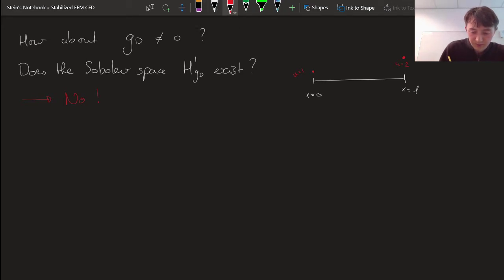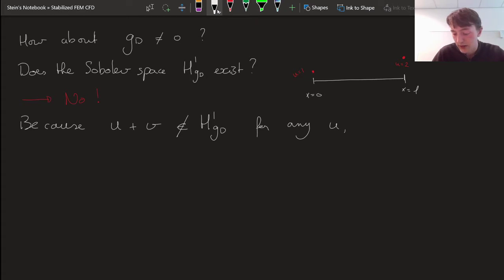And that is because if I take U and I take V and I add them together, then the result is not in H^1_GD for any, actually for any choice of U and any choice of V in H^1_GD. Now why is that not the case? Well, I can actually take an example and I'll draw it once and then it's immediately clear.